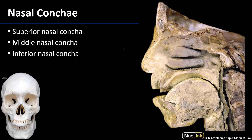When we look at the nasal conchae, we see that there are three: a superior, a middle, and an inferior nasal concha. The superior two are of the ethmoid bone and we sometimes refer to them as ethmoturbinals. The inferior is its own separate bone. Looking at the skull in the anterior view, we can see the inferior and the middle conchae; we cannot see the superior from this view.